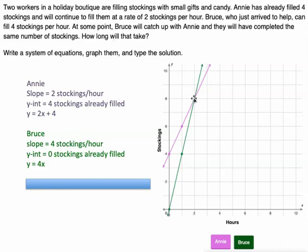Well, there's where the graph crosses. So that's two hours. Okay, so in two hours, they both will have filled eight stockings. So the answer is Bruce will catch up to Annie in two hours.